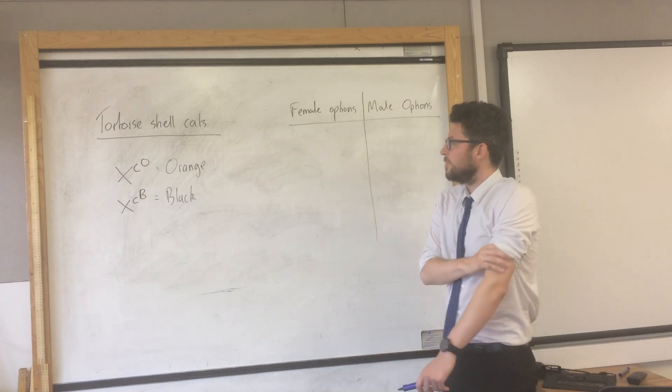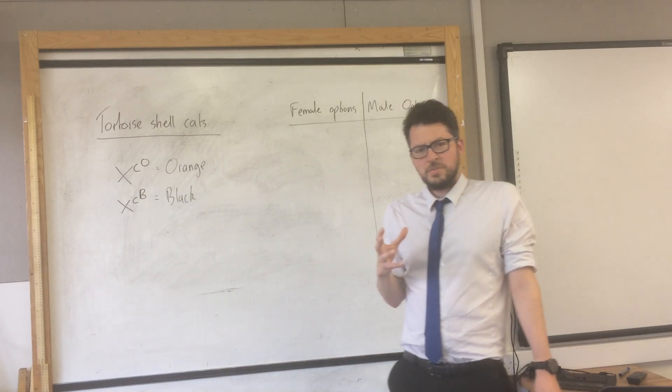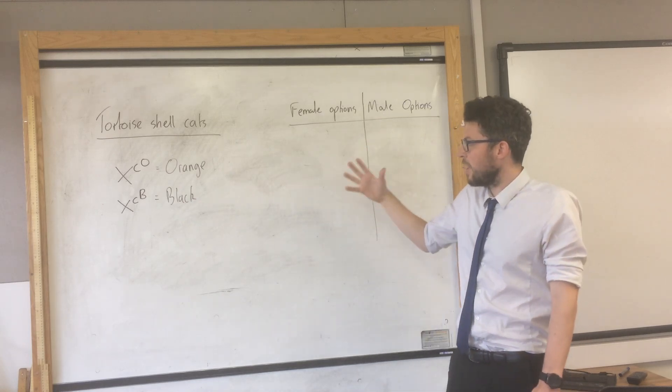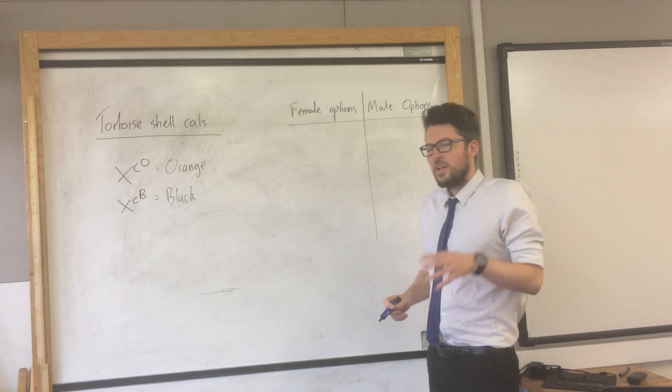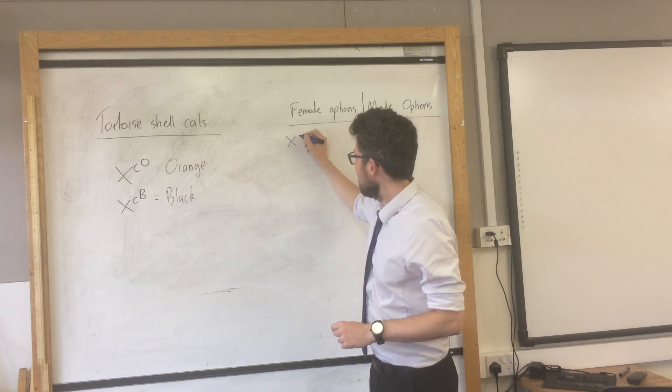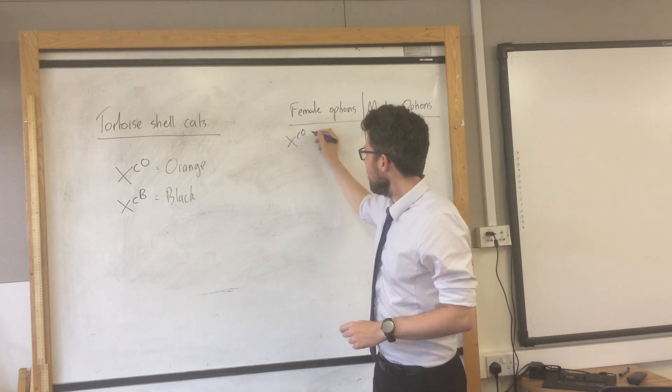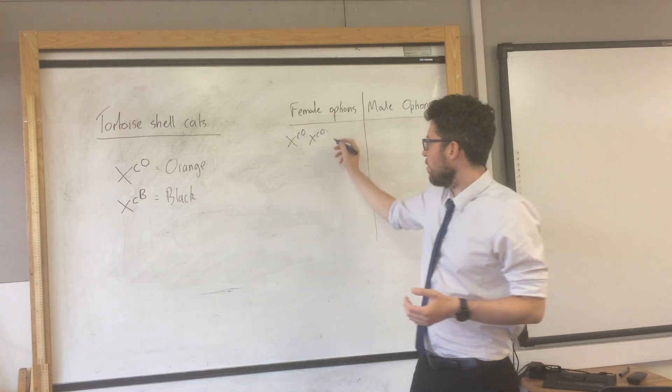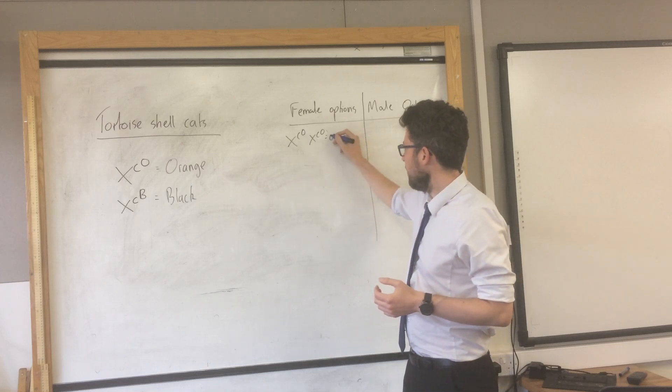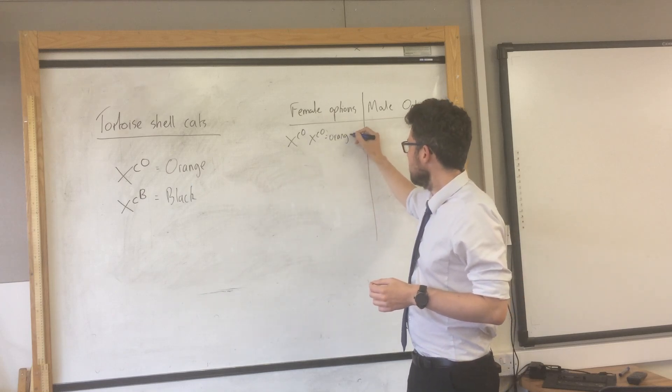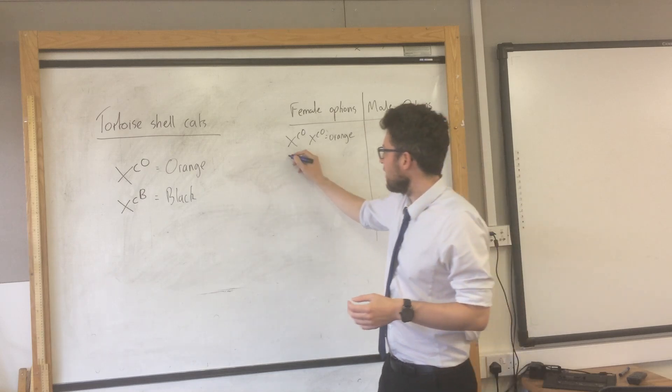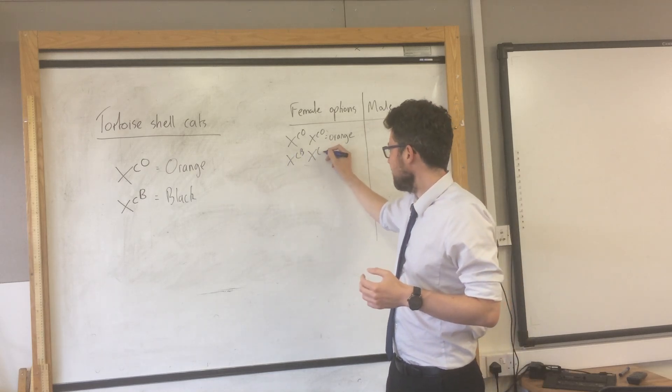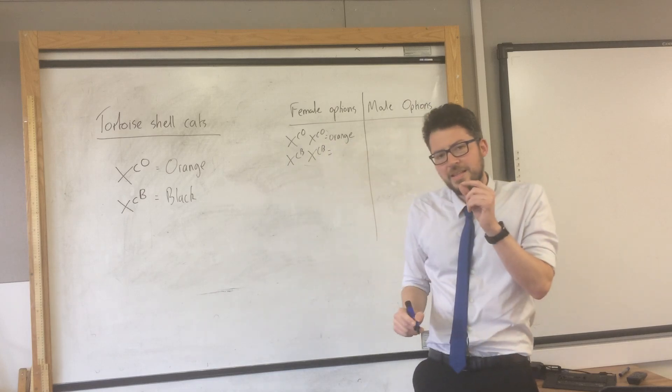So orange and black. What we have to do is see what the possible combinations could be for female and for male. So a female could either inherit XC-O and XC-O, that would mean they were orange all over or ginger. They could inherit XC-B and XC-B, that would mean they were black.